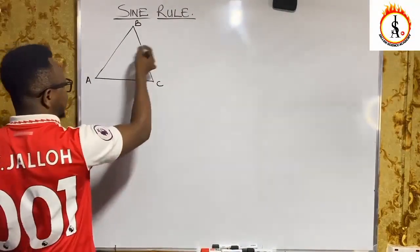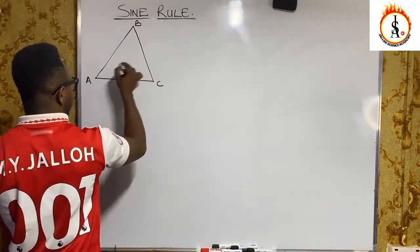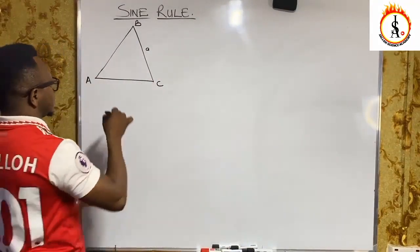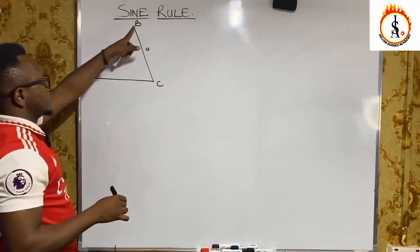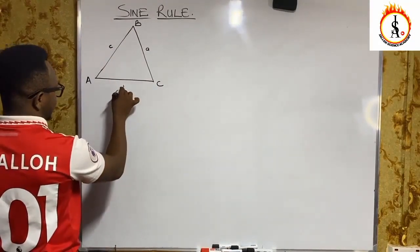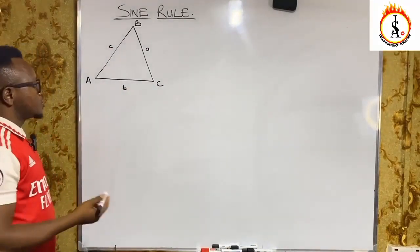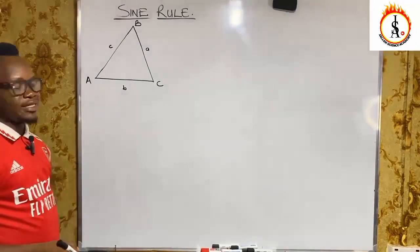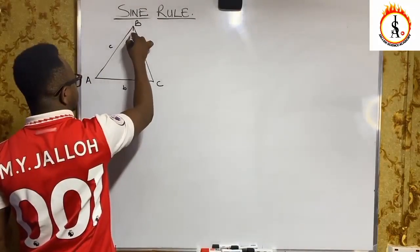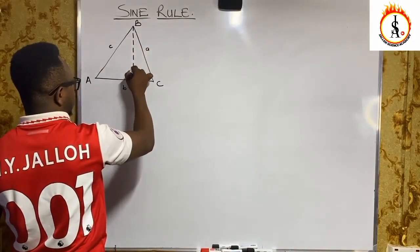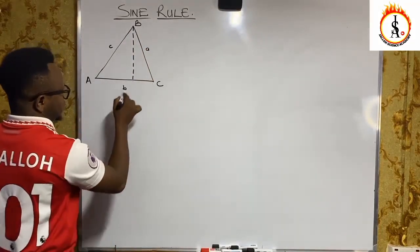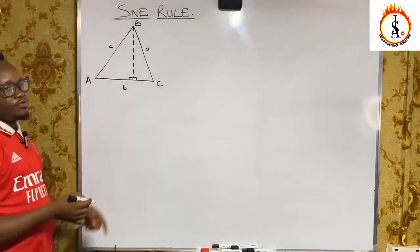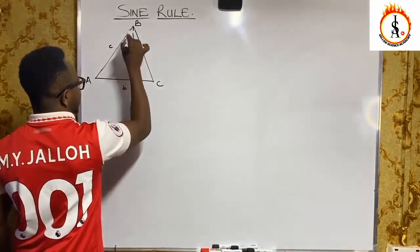The sides facing these angles are labeled as follows: the side facing angle A will be lowercase a, the side facing angle C will be lowercase c, and the side facing angle B will be lowercase b. We are going to construct a perpendicular to the base AC, which forms an angle of 90 degrees. We can refer to this perpendicular as the height H — that's the altitude.